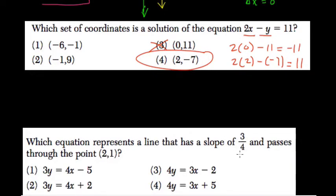Which equation represents a line that has a slope of three-fourths and passes through the point two one?